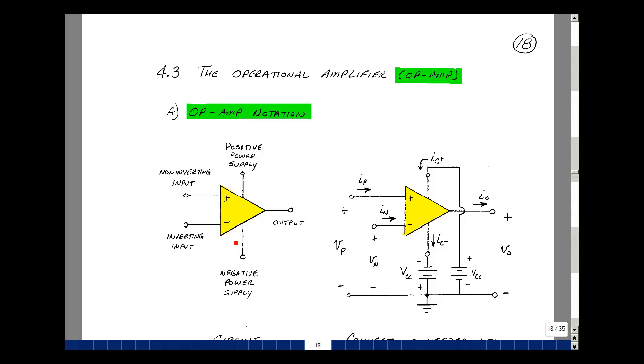What this means is that to get this thing to work, you need to apply a positive battery to this pin and a negative battery to this pin. Current comes out of this power supply and into the IC, and it comes back out again.